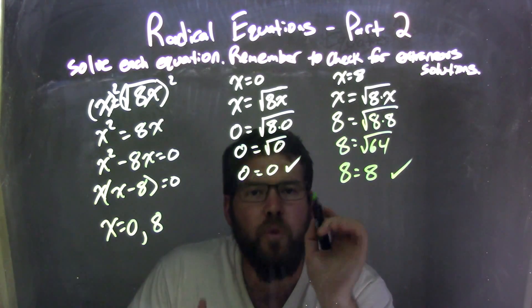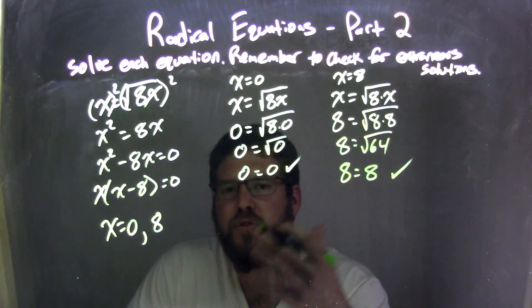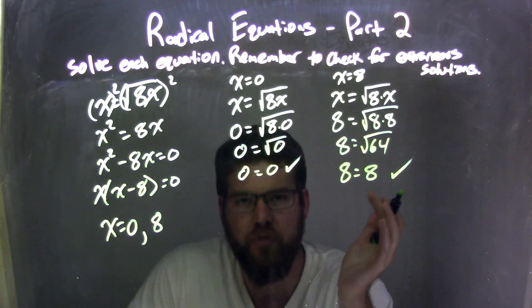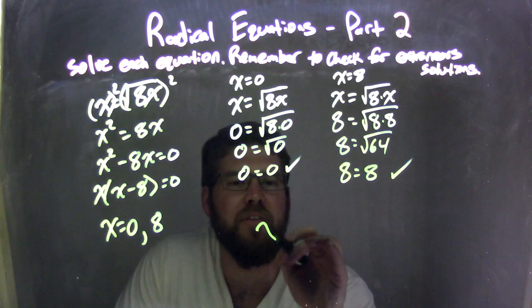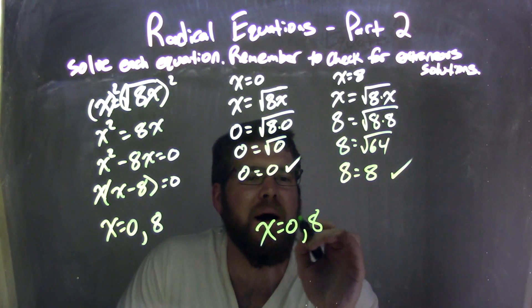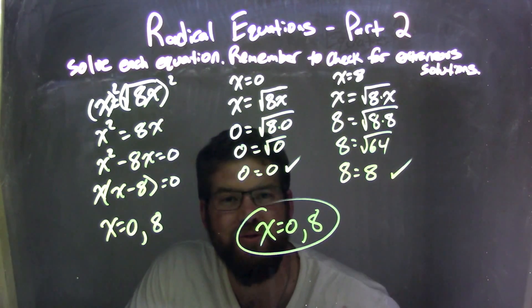So my left and right are equal. They are equal. So what that means is both of these were true solutions. Neither one was extraneous. That could happen. So we have x equals 0 and a positive 8, and those are my two solutions here.